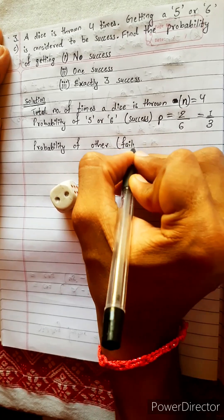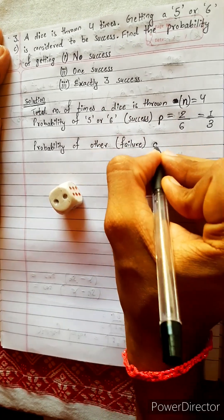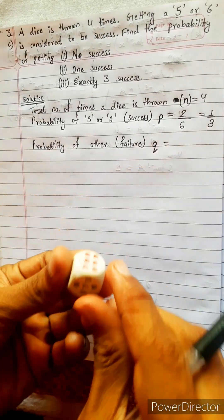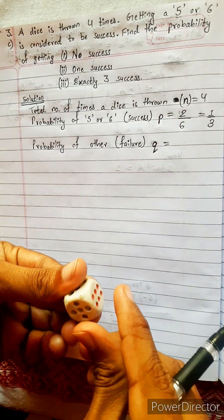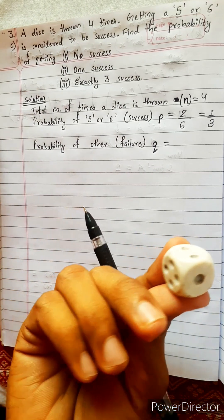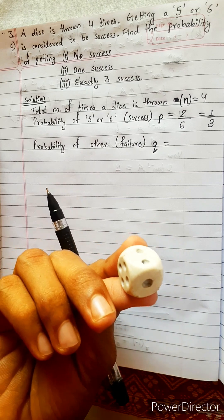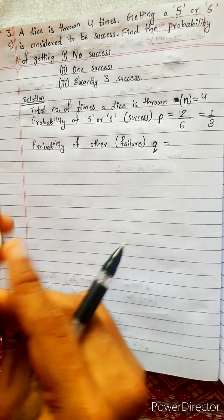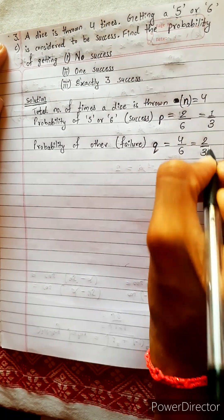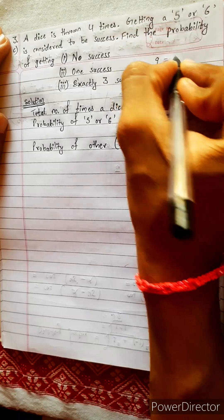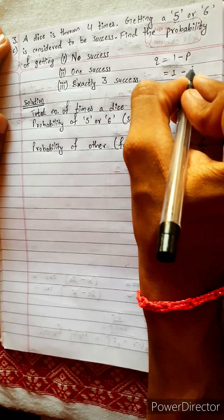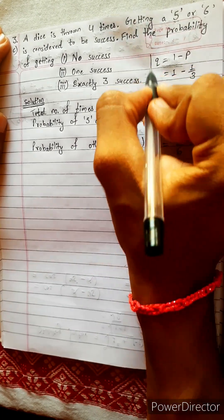Probability of failure — other than five or six, like four, one, two — these are our failure, represented by q. There are four failure faces remaining, so q equals four by six, which is two by three. We can also use the formula q equals one minus p: one minus one by three equals two by three. By any method you get the same result.